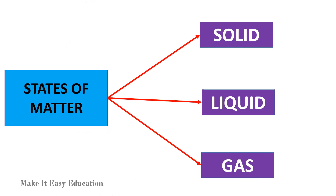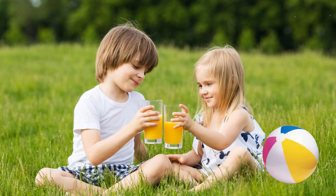The three states of matter are solid, liquid, and gas. Look at the picture. In this picture, the glass the children are holding is solid. The juice in the glass is liquid. The air in the ball is gas.